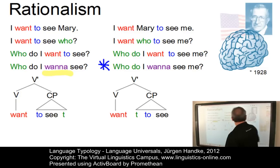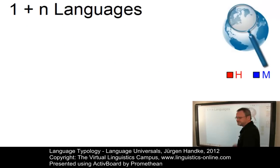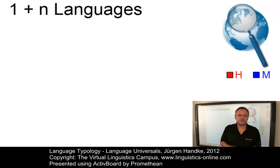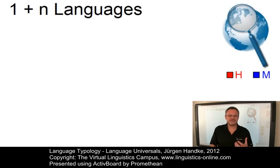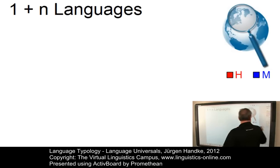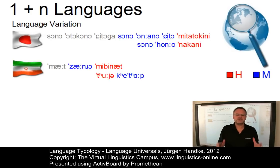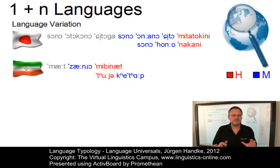Most language typologists, however, favour the empirical approach for the following reasons. The first reason is that languages vary a lot. Work on language universals has shown a wide range of variation across languages. Evidence based on an individual language can often not justify a universal statement.